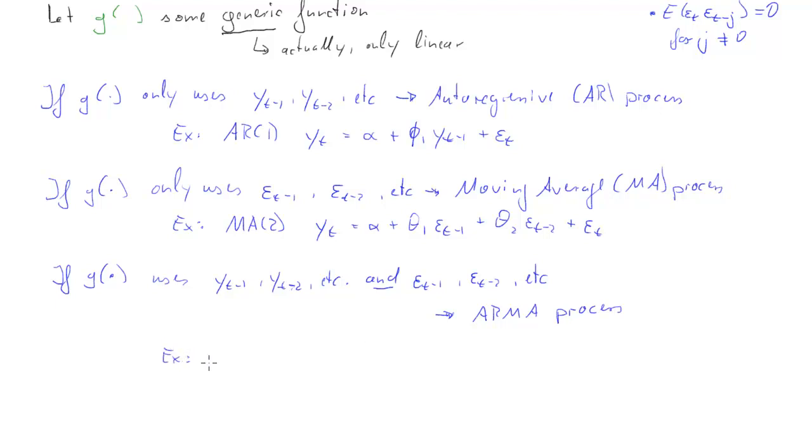The combination of the two previous processes, an ARMA 1, 2 process. So the two numbers now state what sort of order the AR and the MA element of the process have.